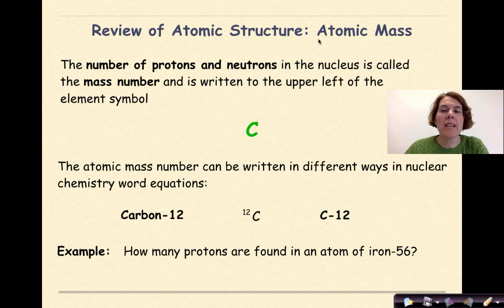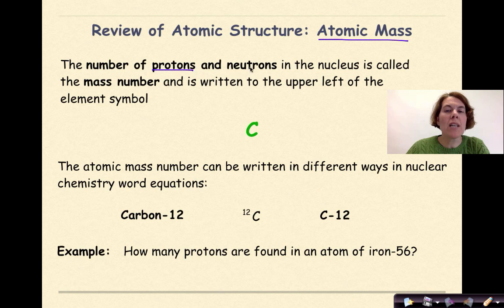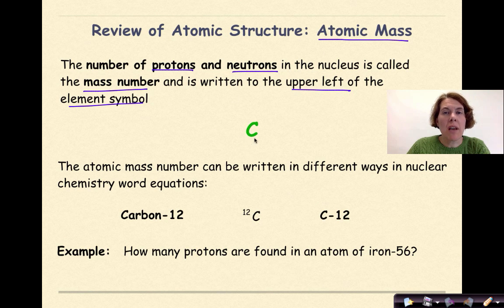Now let's review atomic mass. The number of protons and neutrons in the nucleus is called the mass number, and it is written in the upper left of the element symbol. So here again I have carbon. The atomic mass typically is located in the upper left-hand corner. So this 12 here represents the number of protons and neutrons in this atom of carbon.